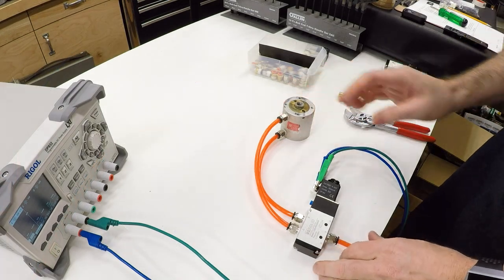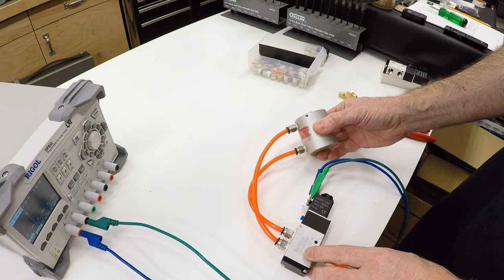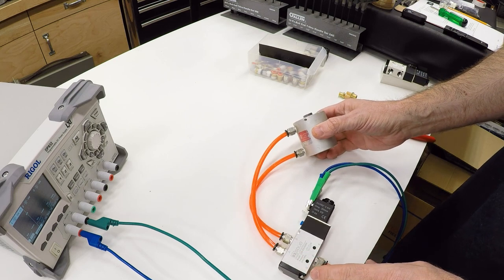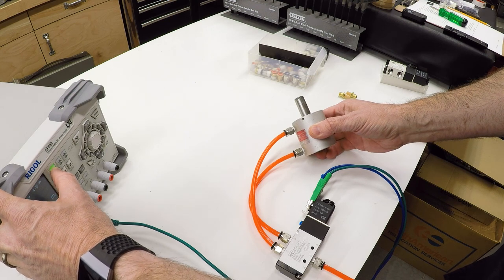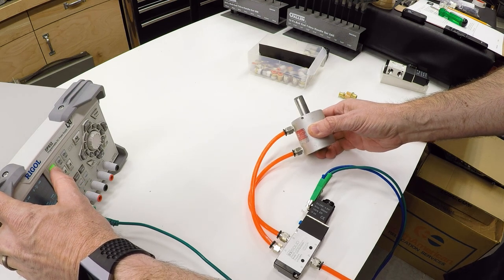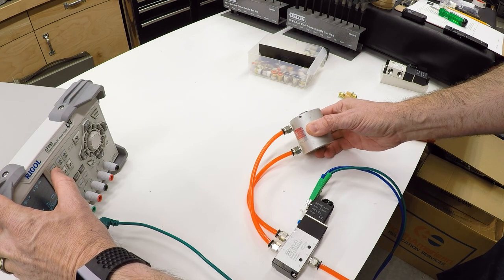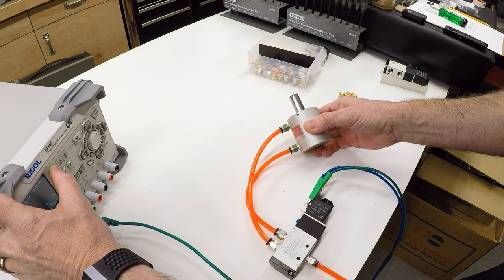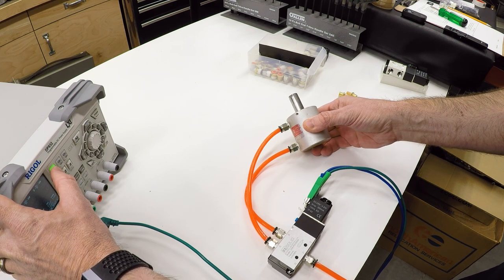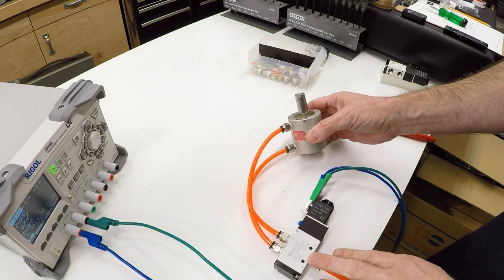What should happen when I switch on the valve is the cylinder should extend. And then when I switch it off, it should retract. Let's see what happens. And sure enough, that's exactly what happens. Now you can hear the exhaust coming out of the ports. That's only at 30 PSI.